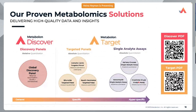On the right-hand side is the Metabolon targeted portfolio, made of different types of targeted panels as well as single analyte assays. As mentioned in the clinical pipeline, this is where analysis becomes very targeted — we focus on certain classes of metabolites, do absolute quantification, or look at biologically relevant sets of metabolites to give a quantitative insight into specific biology. QR codes will appear on screen as we go through these products for more information.